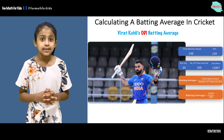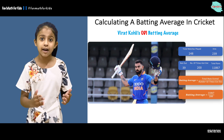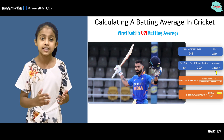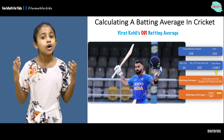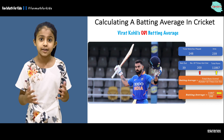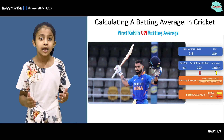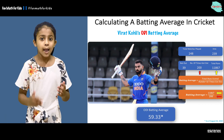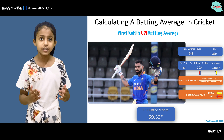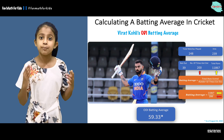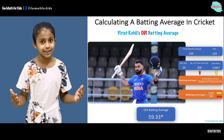If we solve this we will get the batting average as 11,867 over 200. That is why the ODI batting average is 59.33.